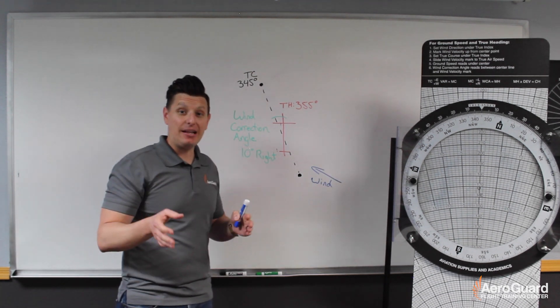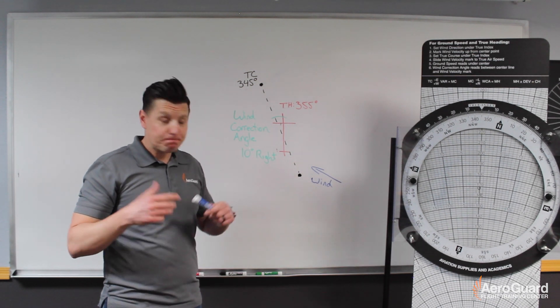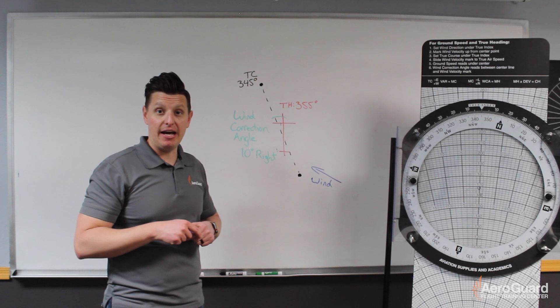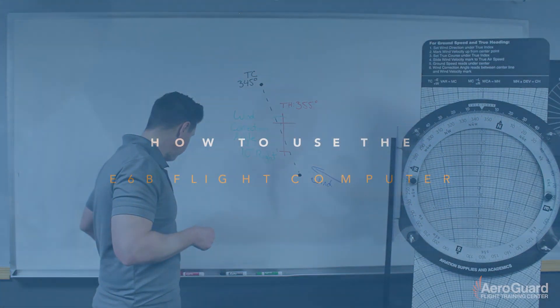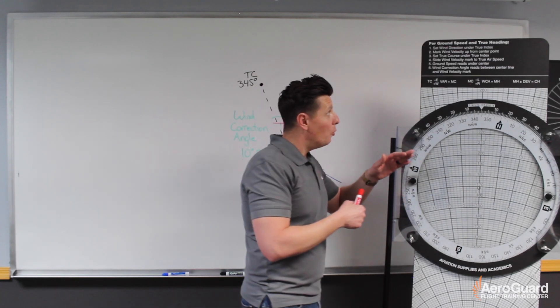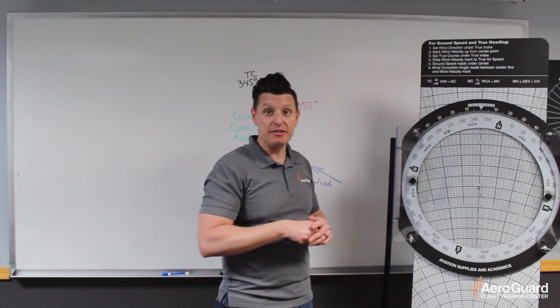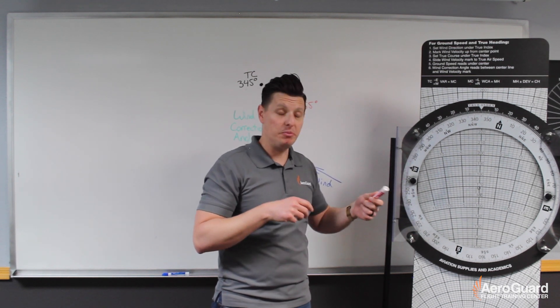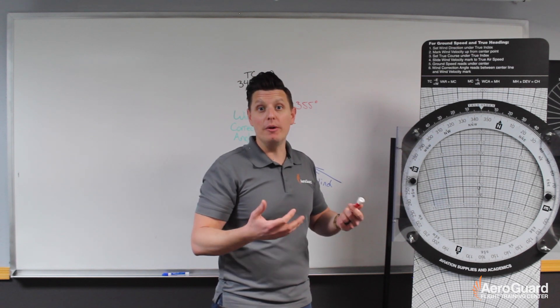To figure out exactly what it will be, we're going to switch over to the E6B and walk through exactly how to calculate the wind direction and speed. In order to do this, we're basically going to follow the normal steps that are listed for the wind side of the E6B, and we're kind of going to reverse engineer it and sort of do it backwards.